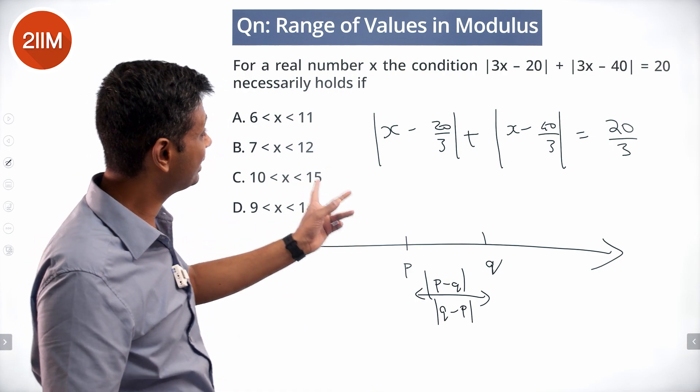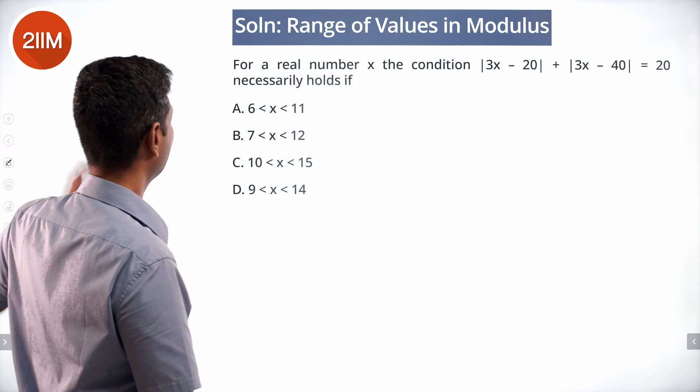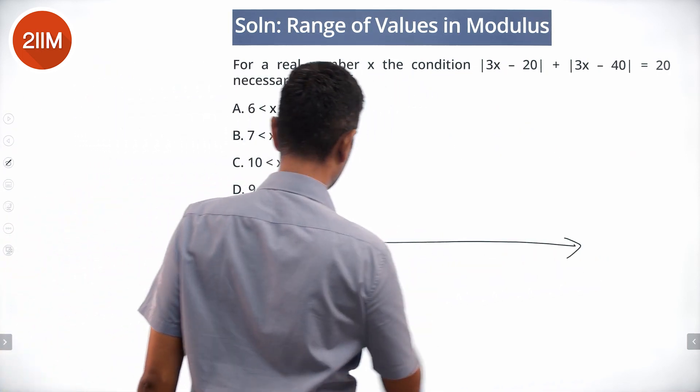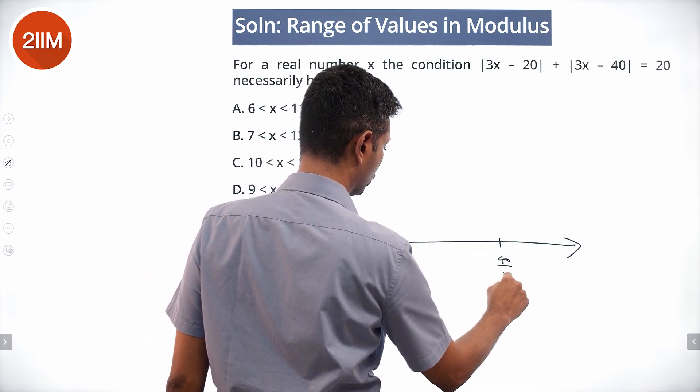Now we have 20 by 3 and 40 by 3. The distance between them should be 20 by 3. Think about this. I am going to plonk 20 by 3 on the number line, 40 by 3 on the number line.